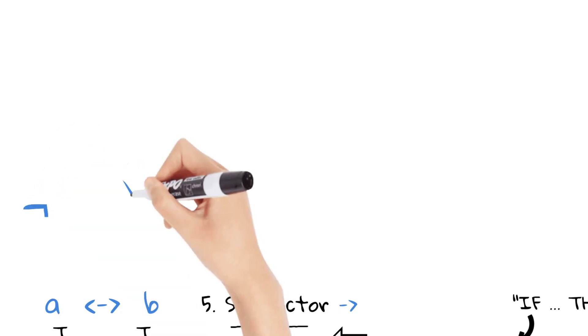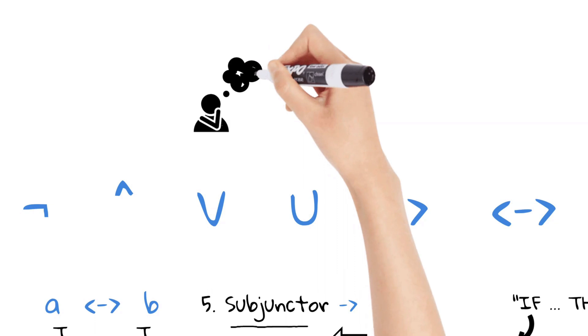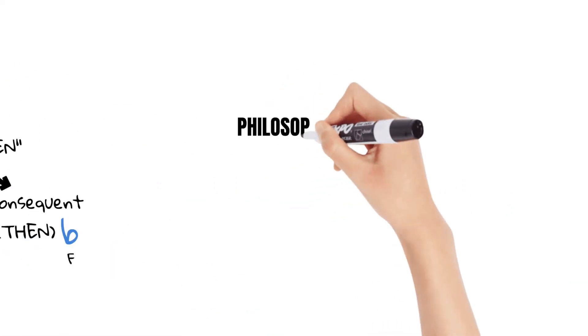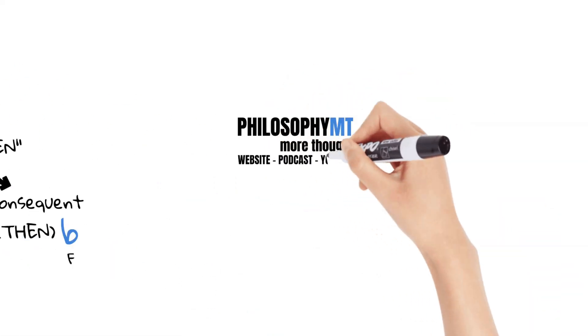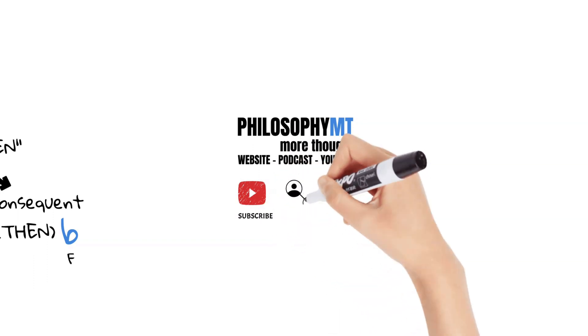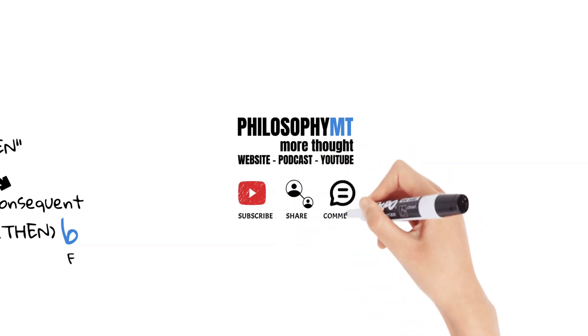By using these logical operators and combining elementary propositions, we can create more intricate and nuanced statements that capture complex relationships and conditions. Complex propositions provide a way to express more sophisticated ideas and arguments, based on the logical connections between elementary statements. That brings us to the end of today's feature. In our next installment, we'll delve deeper, exploring the intricacies of truth tables and logical junctures, also known as operators. Stay tuned for that and don't forget to subscribe, to make sure you don't miss out. Until then, keep your minds open and your questions ready. This is Philosophy MT.